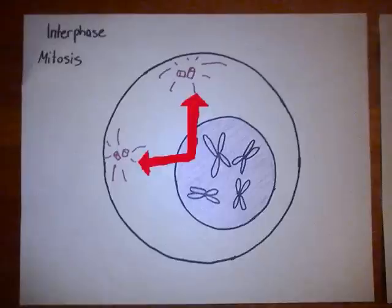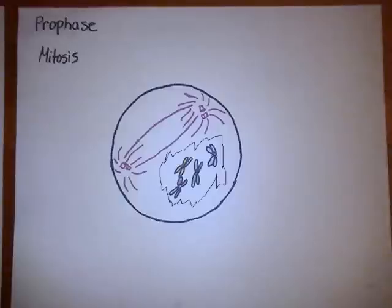Meanwhile, protein fibers grow from the migrating centrioles, forming a latticework of spindles. For reasons scientists don't fully understand, the nuclear membrane suddenly disintegrates.